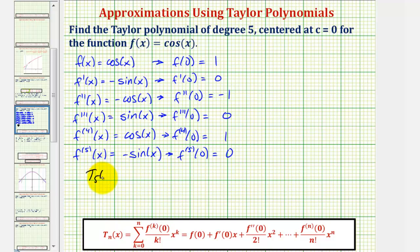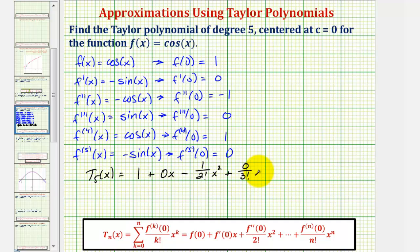So our degree five Taylor polynomial centered at zero equals f of zero, which is one, plus f prime of zero times x, which is zero times x, plus f double prime of zero divided by two factorial times x squared — that gives minus one divided by two factorial times x squared — plus the third derivative at zero, which is zero, divided by three factorial times x cubed, plus the fourth derivative at zero, which is one, divided by four factorial times x to the fourth, and finally plus the fifth derivative at zero, which is zero, divided by five factorial times x to the fifth.